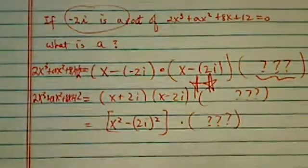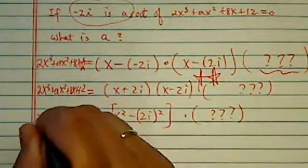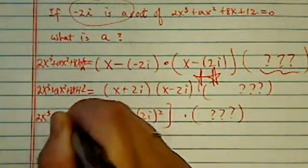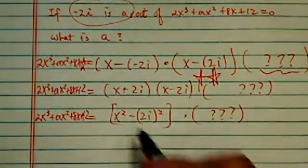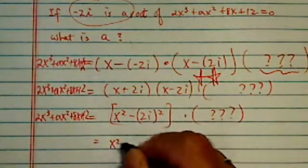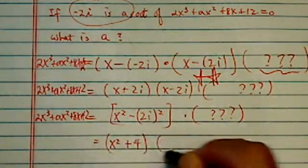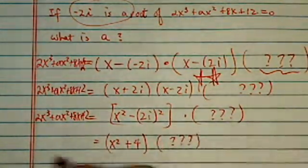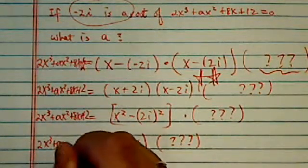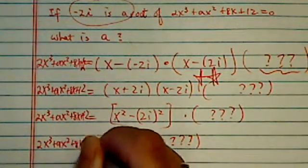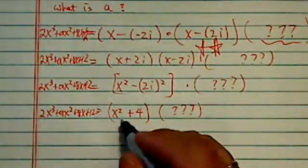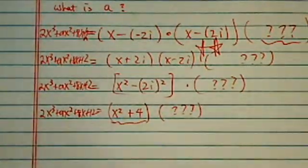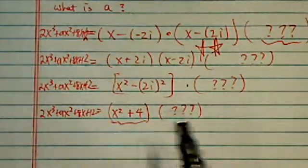We're going to be using long division, as unpleasant as it sounds, but it's unavoidable here. So this chunk is equal to x² + 4. We don't know what this is. And then here comes the long division part. This one we can't use synthetic division because it's x² + 4. It has to be x minus a number instead of an x² term.